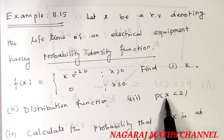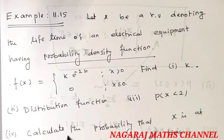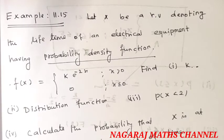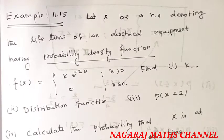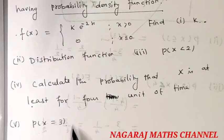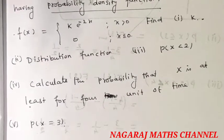Find the distribution function. Calculate the probability that x is less than 2. Calculate the probability that x is at least 4 units of time. And finally, find the probability that x is equal to 3.